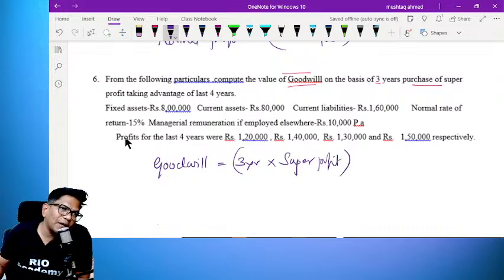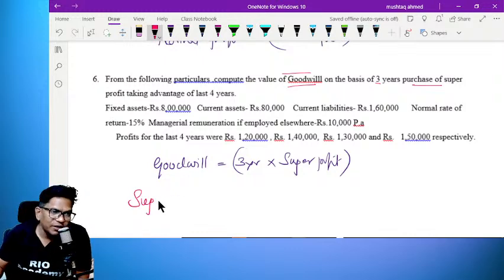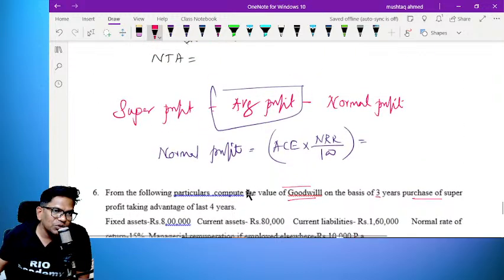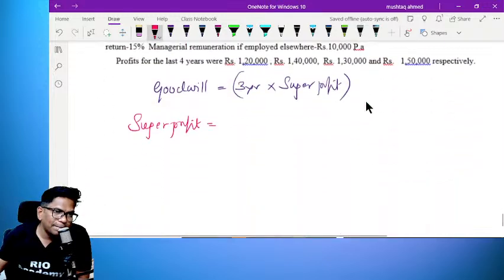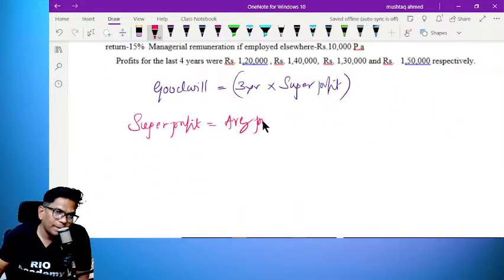Super profit formula: super profit is equal to average profit minus normal profit.